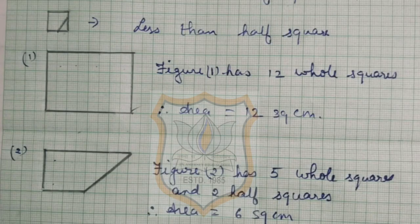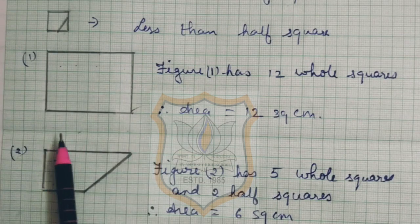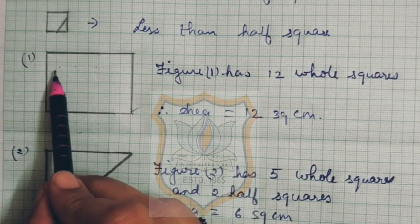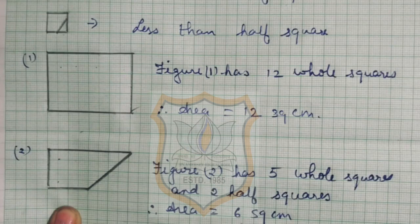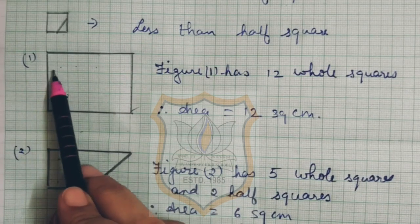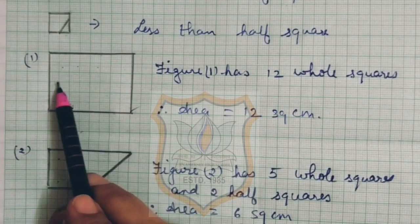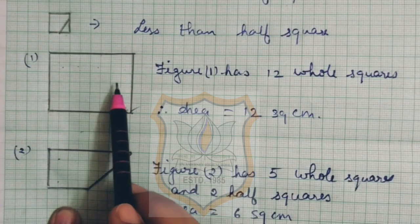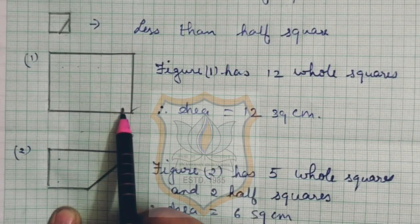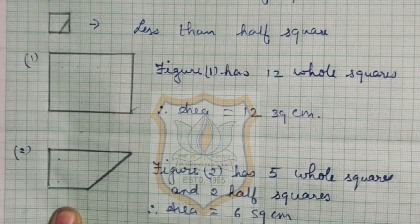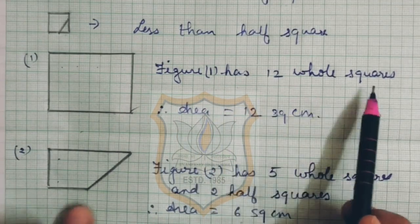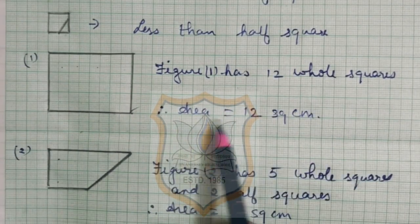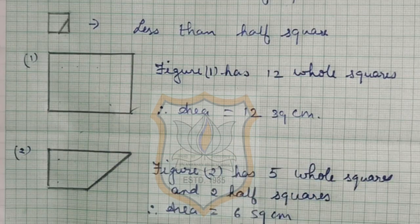Now students, let me explain this concept with some figures. Here you can see a figure is given. In this figure, whole squares are given. We have to just count how many full squares are given. You can see there are 1 through 12 — 12 complete squares in this figure. So figure 1 has 12 whole squares. Therefore the area of this figure is 12 square centimeters.